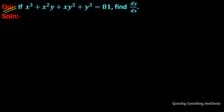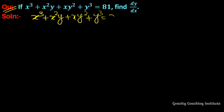Question: if x⁴ + x²y + xy² + y⁴ = 81, find dy/dx. We have x⁴ + x²y + xy² + y⁴ = 81, and we will differentiate both sides with respect to x.